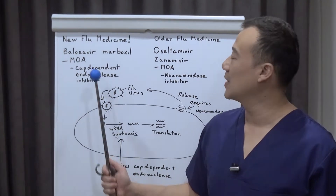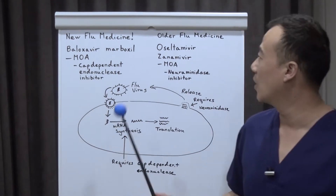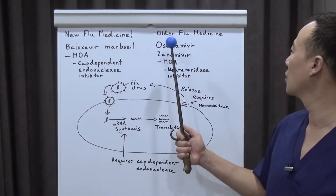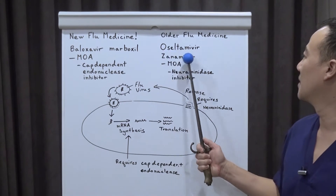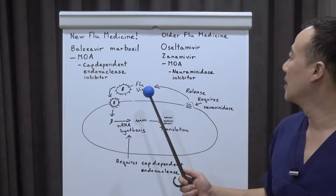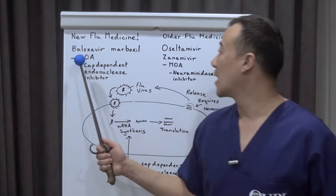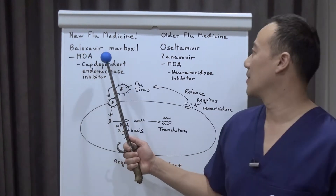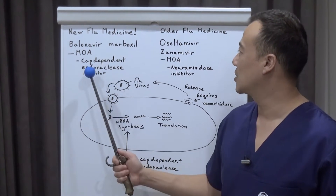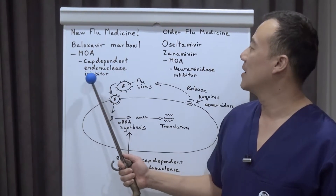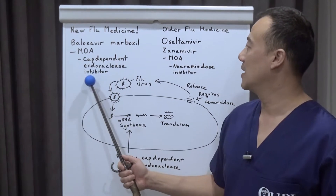This one has a new mechanism of action compared to the older flu medicines, which are Oseltamivir and Zanamivir. Baloxavir has a new mechanism of action — it's a cap-dependent endonuclease inhibitor.